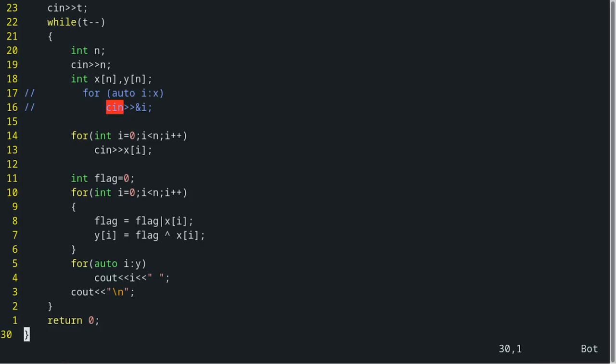If that sequence doesn't have values, at least 1, then flag will be 0. And similarly then for y sequence we are doing the XOR of that and then we are printing that sequence.